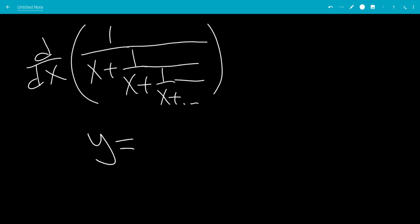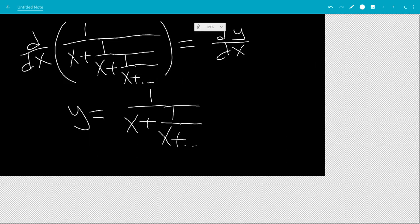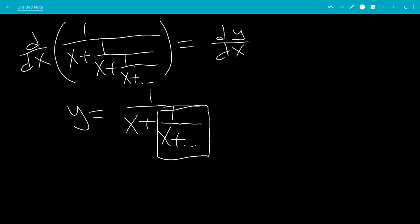So let's let y equal 1 over x plus 1 over x, and so on. So this means our original question turns into what is dy dx, but what is this? This is still y,